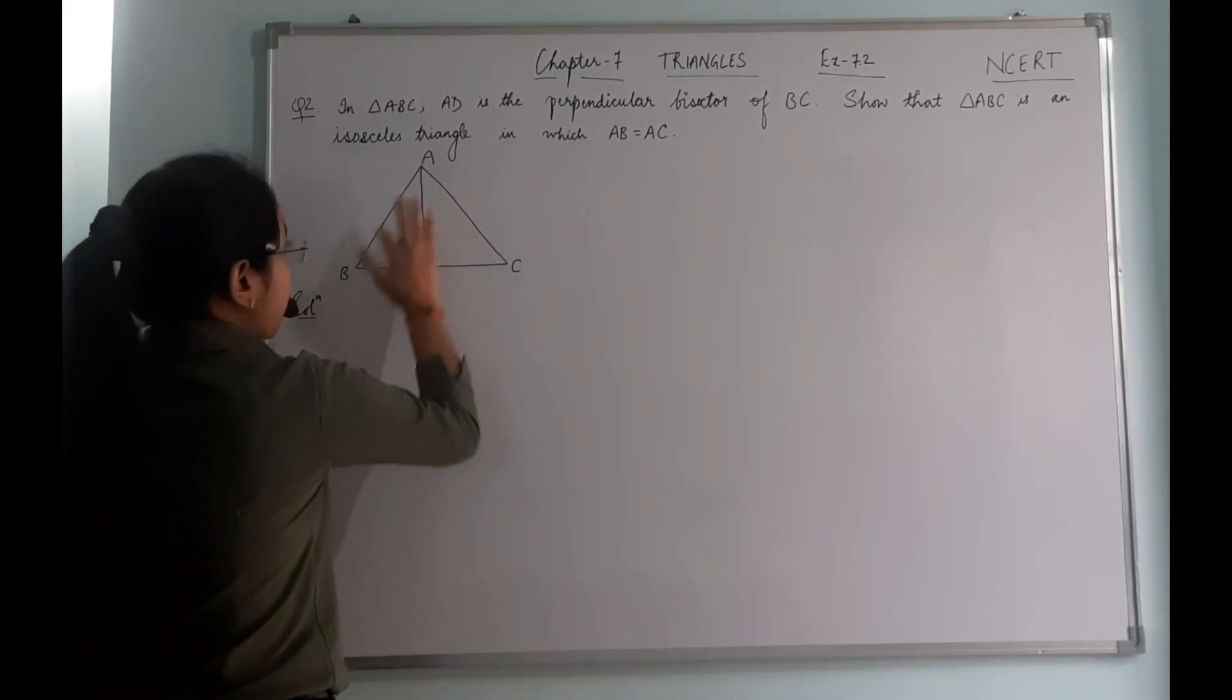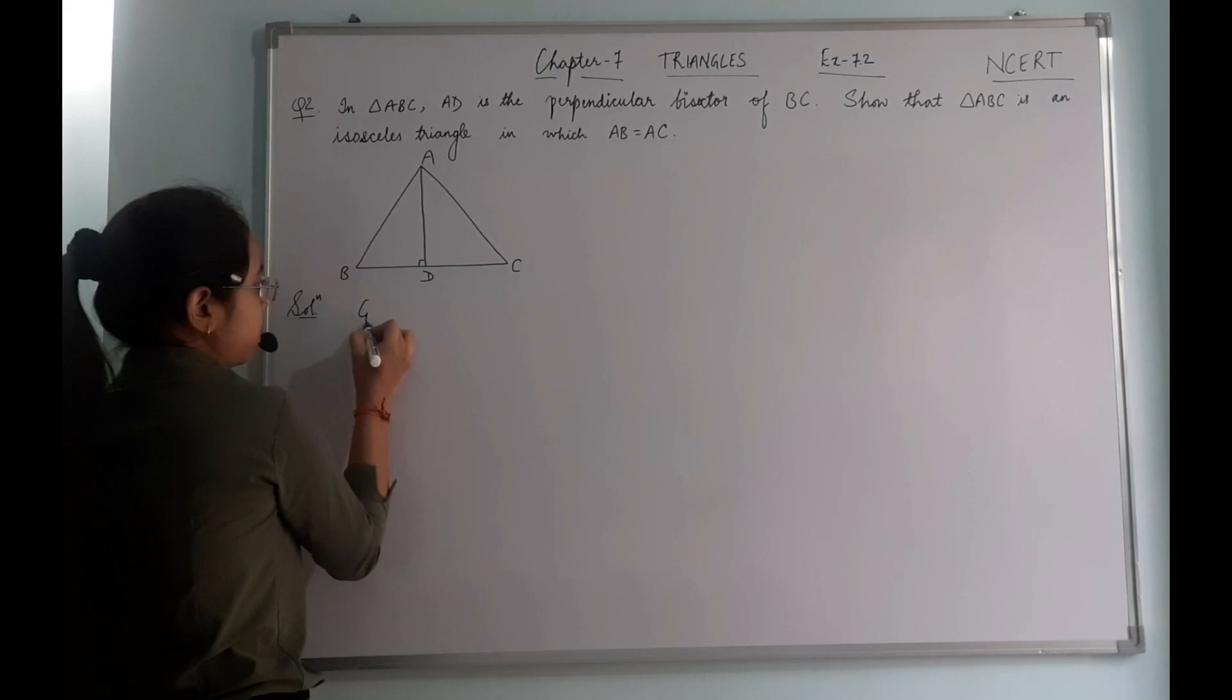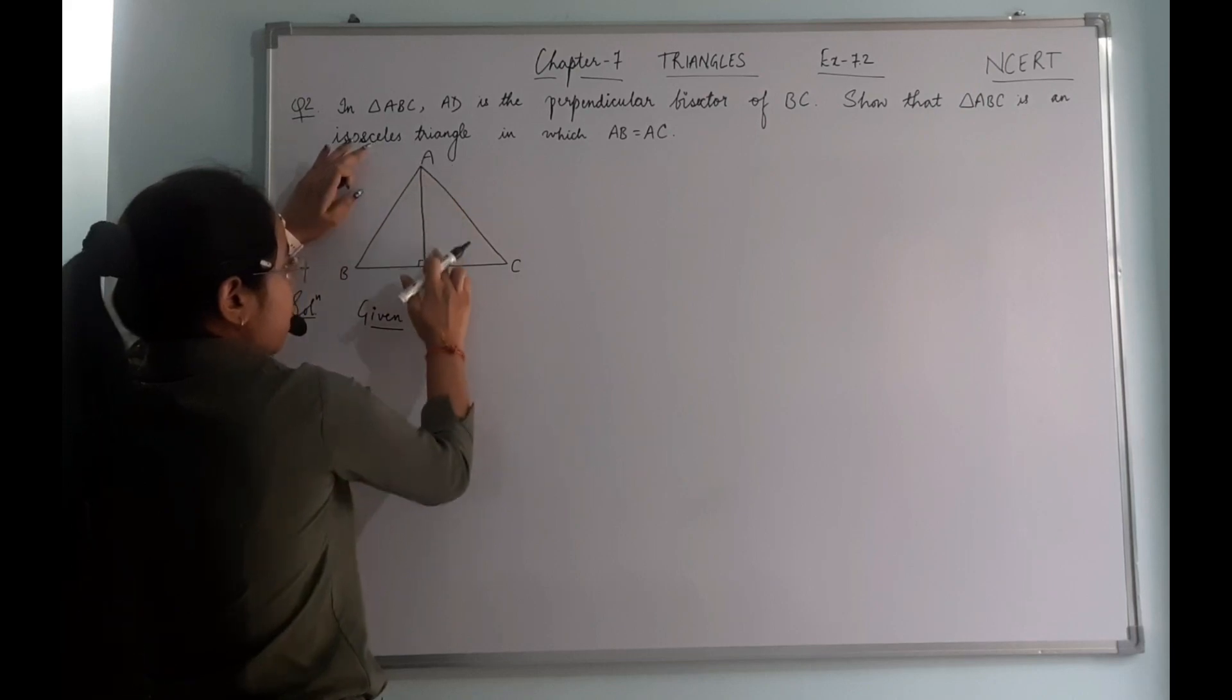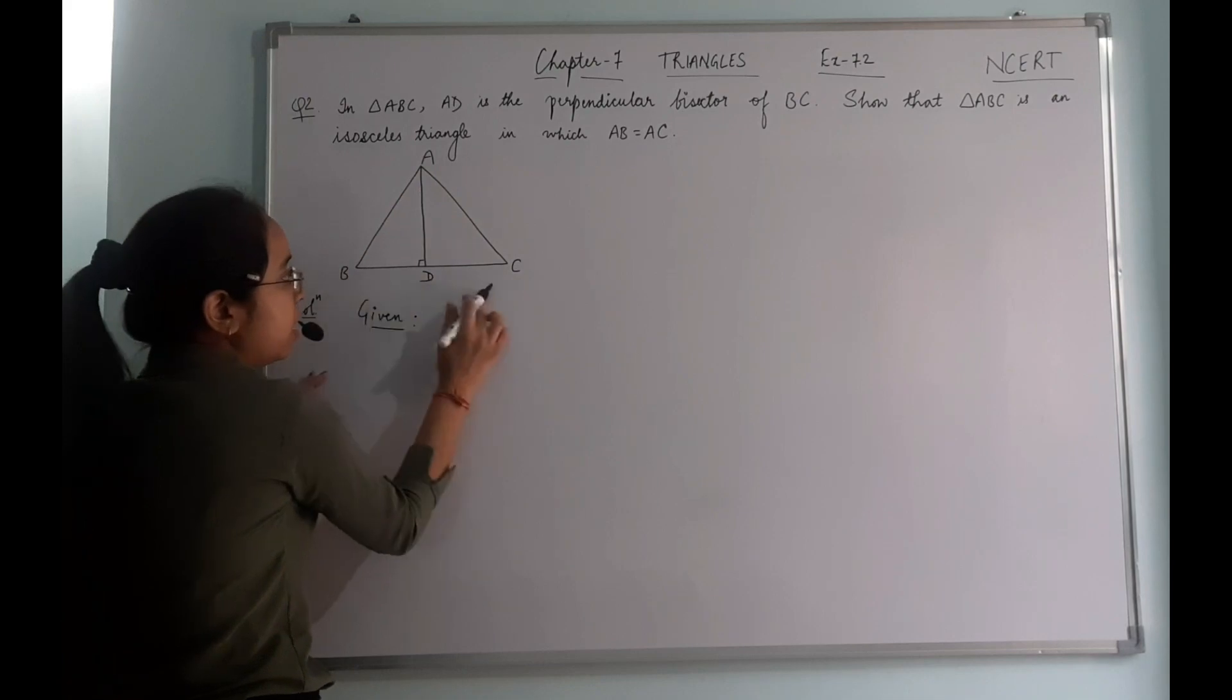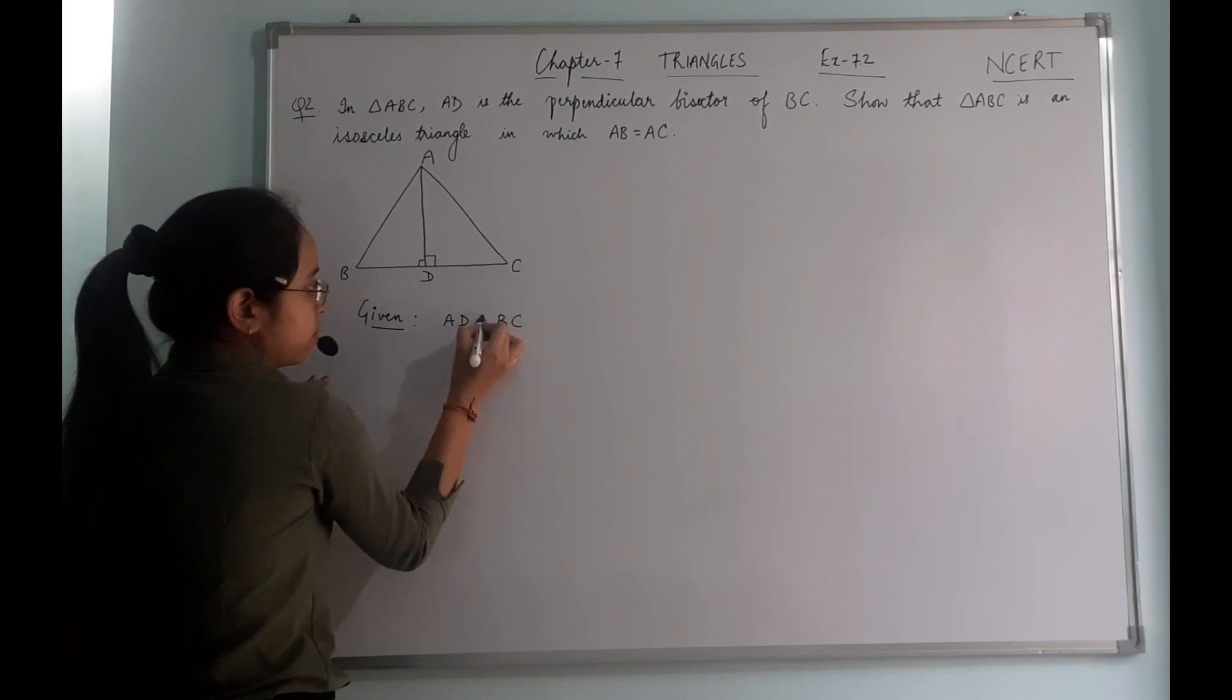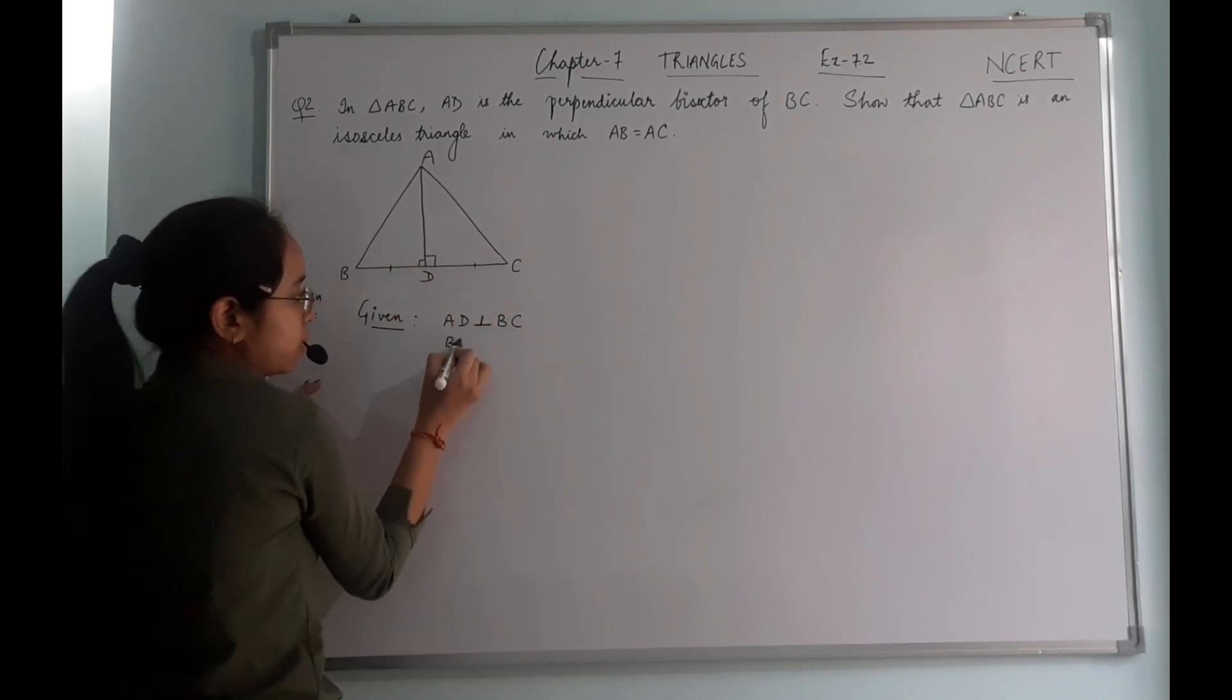So we are given triangle ABC in which AD is the perpendicular bisector of BC. First we will write what is given to us. A triangle ABC in which AD is perpendicular bisector of BC. That means AD is perpendicular to BC and it bisects BC, meaning BD equals DC.